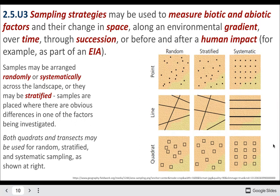We might also choose to select an area if there are obvious differences in one of the factors being investigated. For example, when we used our quadrats we looked at a mud pit — we might compare the mud pit to an area just next to it that is undisturbed, to compare the difference in biodiversity.